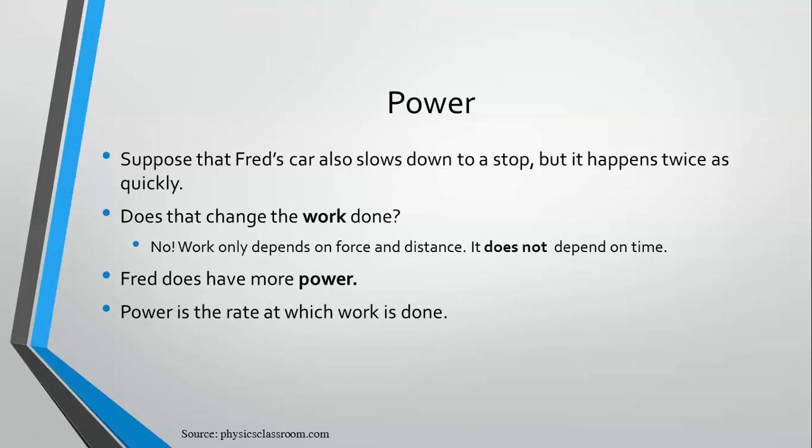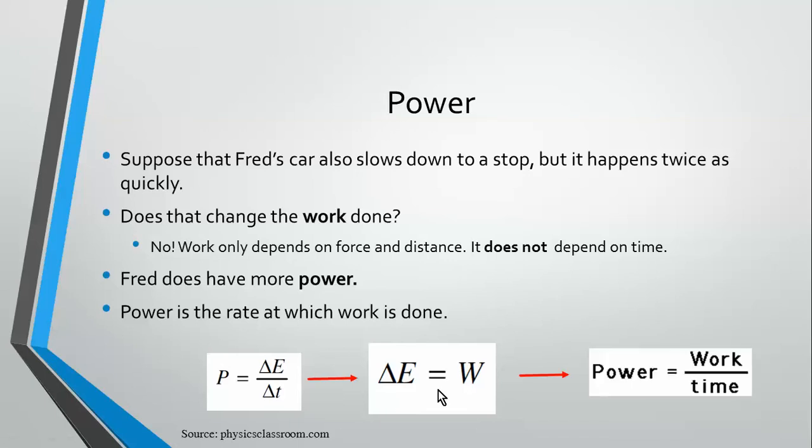And power is the rate at which we do work because power takes into account the time. So the equation on your equation sheet for power is change in energy over the change in time. And remember, change in energy according to the work energy theorem is equal to the work. So if you see this equation on your equation sheet and you also have this equation on your equation sheet, you can conclude that power is equal to the work done per unit time, or work over delta T.